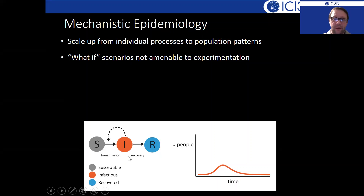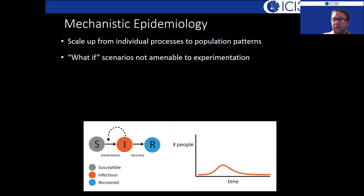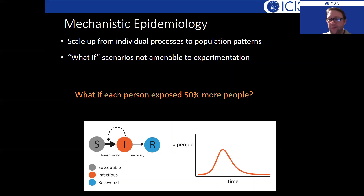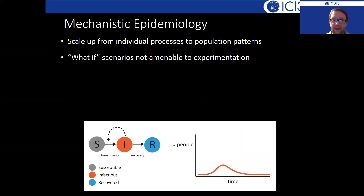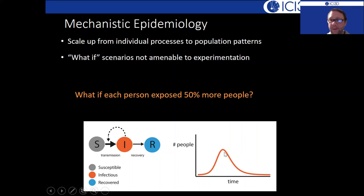I like to think of it from a causal inference framework about counterfactual scenarios. Maybe this is one scenario when we've parameterized the model a specific way — but what if we go back in time, change things, run forward through time, and see what happens? For example, what if each person exposed 50% more people? That amounts to the transmission rate increasing, and we can see more people became infected — a larger epidemic curve.